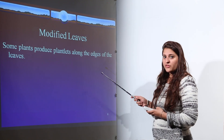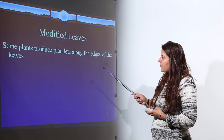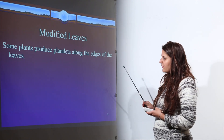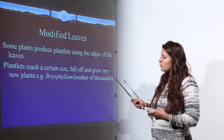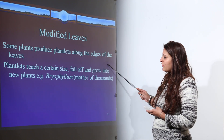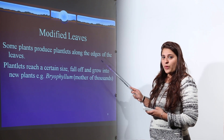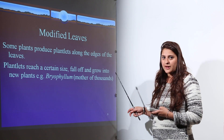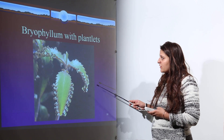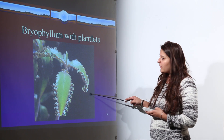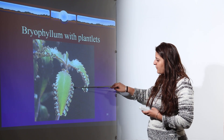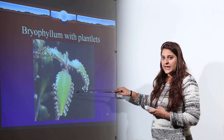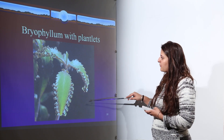The next modification is modification of the leaves. Some plants have plantlets along the edges of their leaves, and these plantlets lead to production of a complete plant. When the plantlets reach a certain size, they fall apart and grow into new plants. Bryophyllum is one such example, where plantlets at the edge of a leaf fall off and develop into a complete new plant.